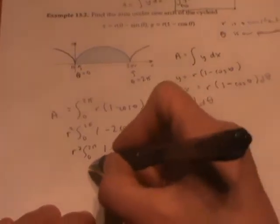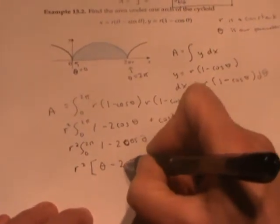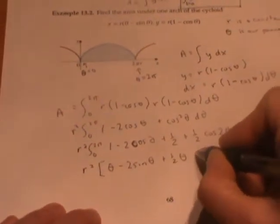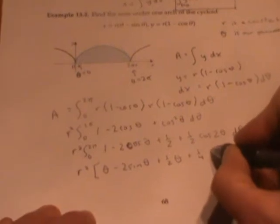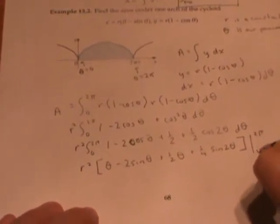Now we can integrate all four terms and get r squared times theta minus two sine theta plus one half theta plus one fourth sine two theta evaluated between two pi and zero.